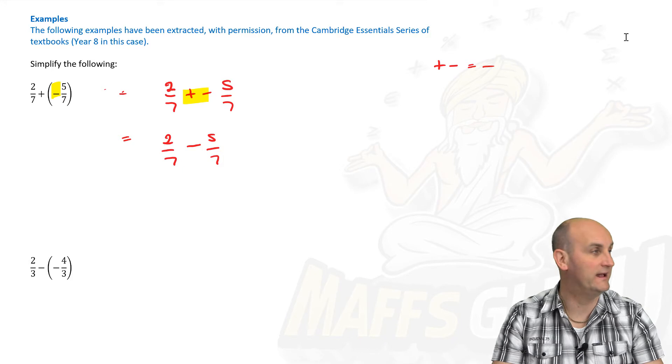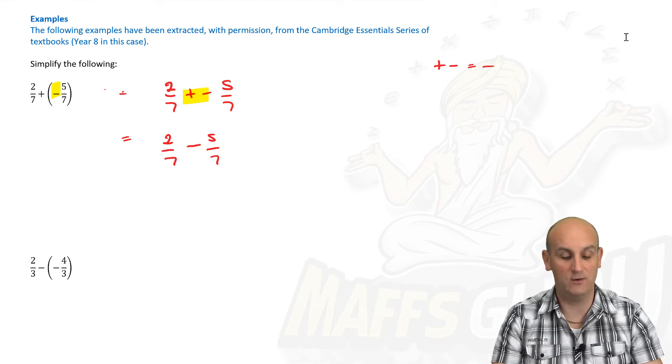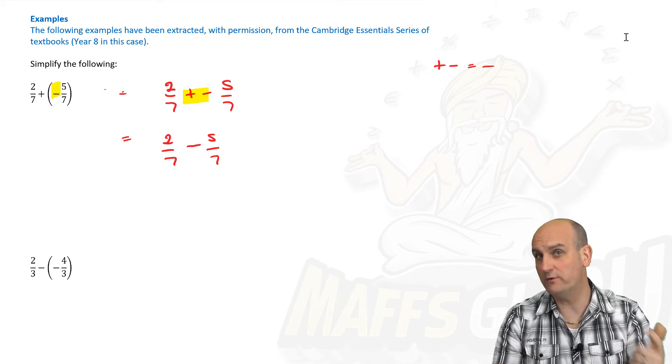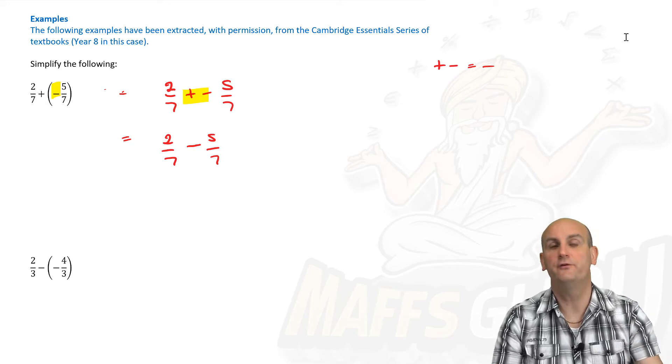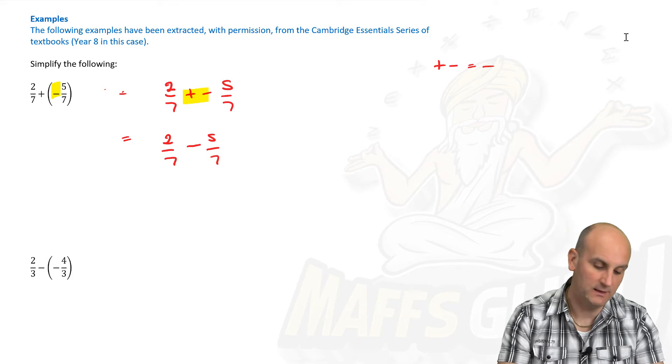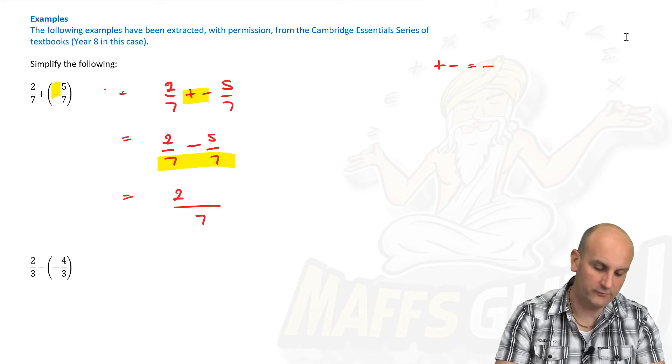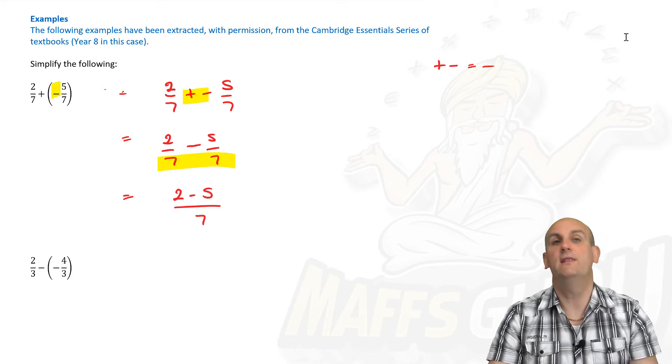Believe it or not, ladies and gentlemen, our negative number stuff is pretty much finished now because I'm back to the fraction stuff. Are we adding or subtracting a fraction? We are. So if you remember, the bottoms have got to be the same. Are my bottoms the same? They are indeed. So that becomes on seven. That becomes two minus five.